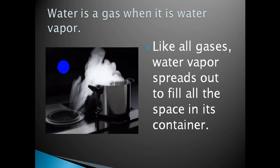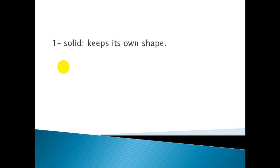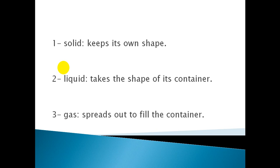Let's summarize what we said today. Everything around us is matter, and it must have mass and take up space. There are three states of matter: solid, which is the only state that keeps its own shape; liquid, which takes the shape of its container; and gas, which spreads out to fill all the container. That's all for today, Grade 2. Thank you for listening!